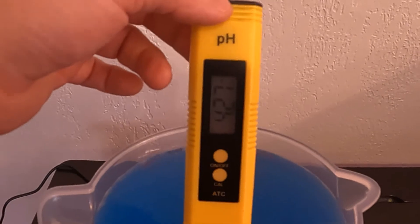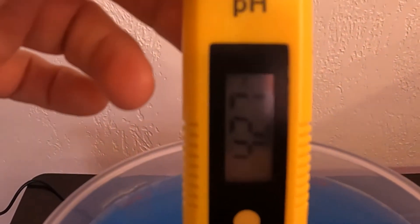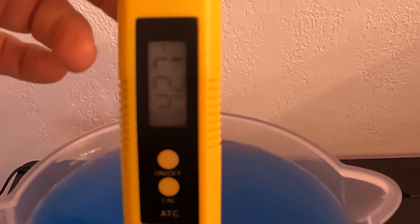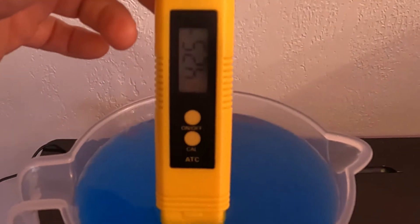Now that everything's dissolved we're going to go ahead and measure our pH. We want it to be around 5.8 and as you can see we're a little bit low. That's usually the case with the media. So we'll go ahead and grab our pH up.